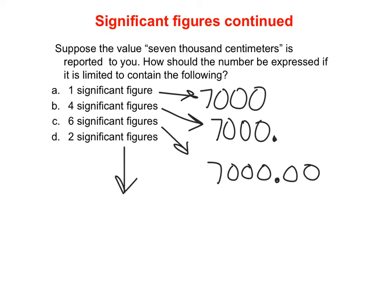Writing 7,000 with two significant figures causes some debate. The seven is significant, and the first zero is significant for two sig figs, but adding a decimal point makes four sig figs. The only way to write 7,000 with two significant figures is scientific notation: 7.0 × 10³, which equals 7,000 and tells us both the 7 and the 0 are significant — so this number has two significant figures.